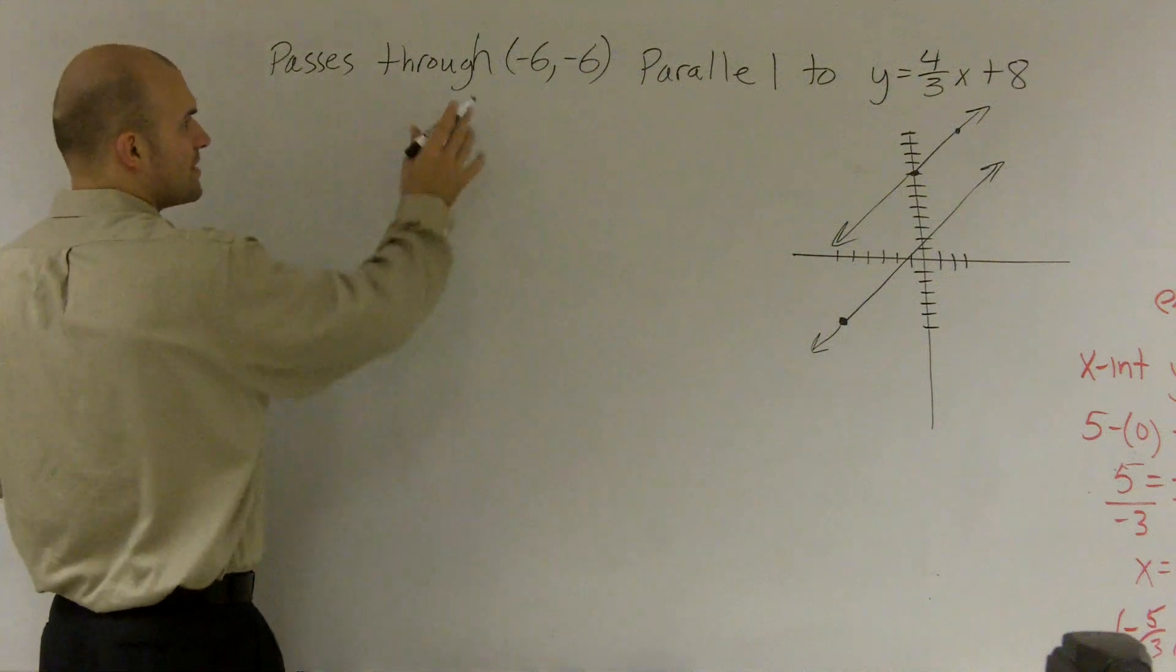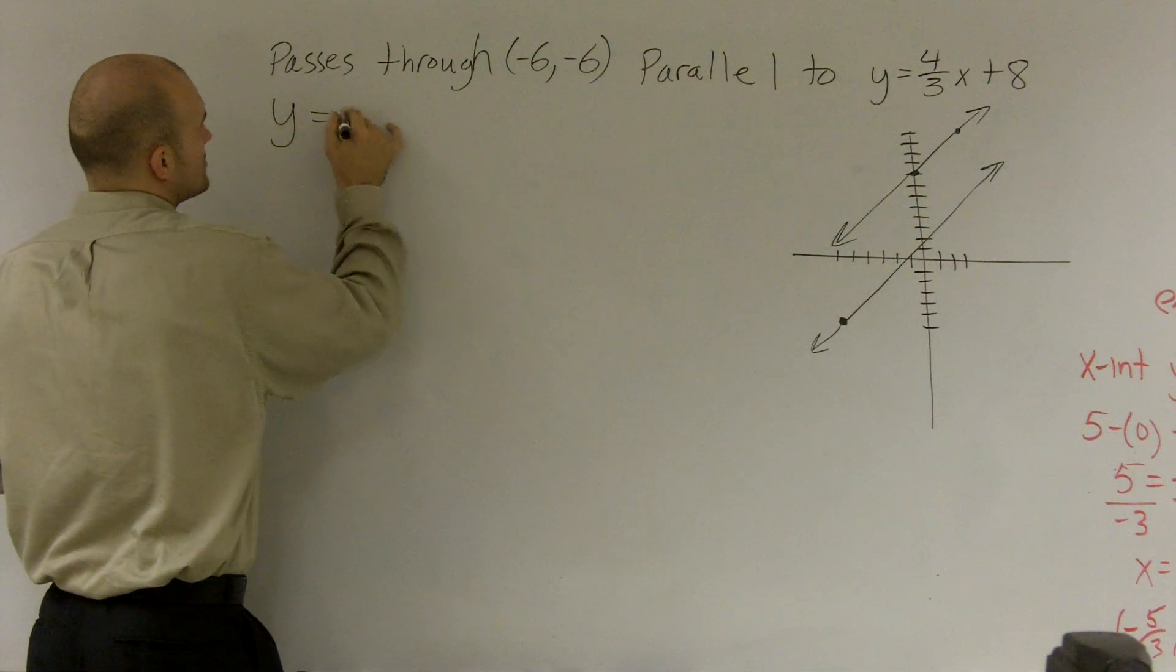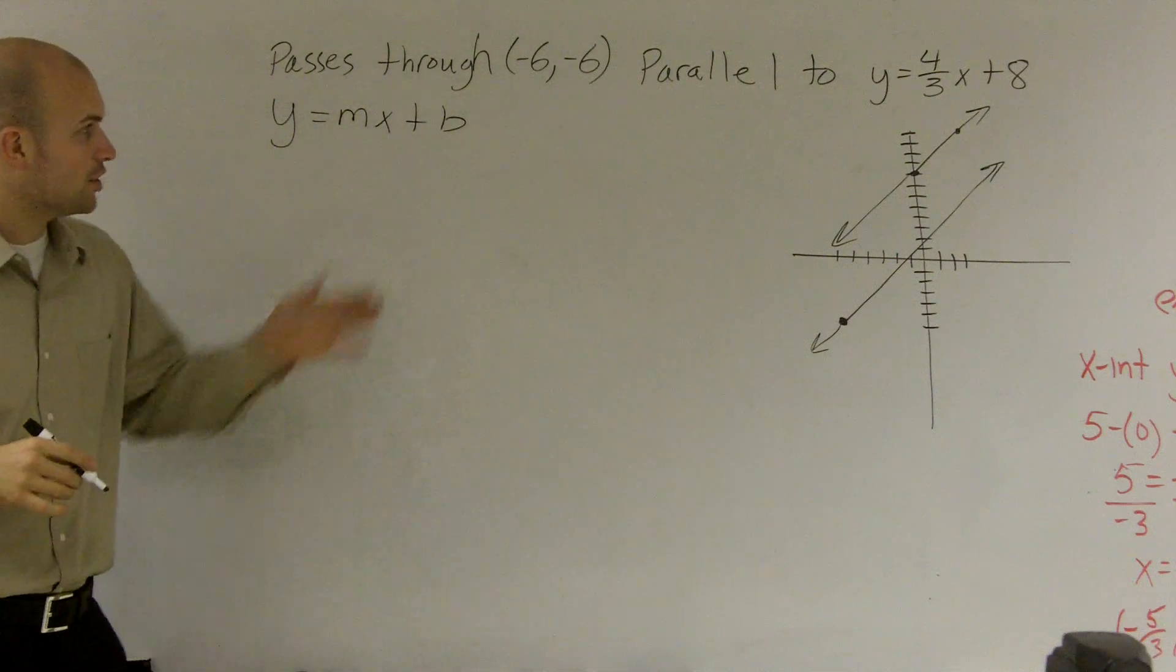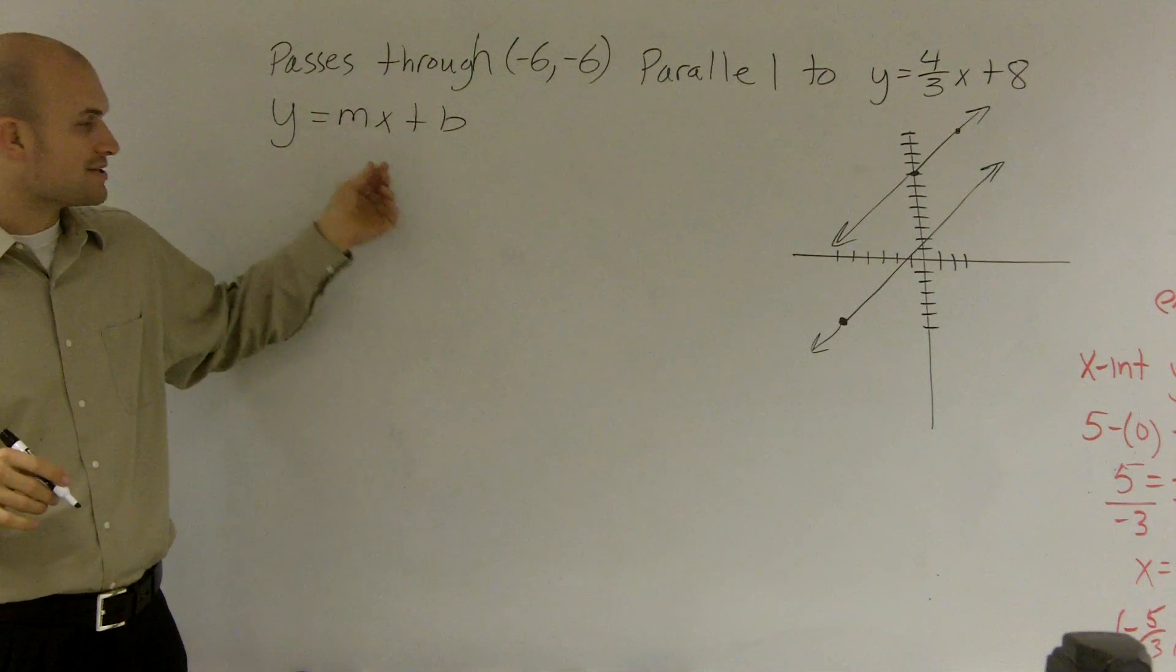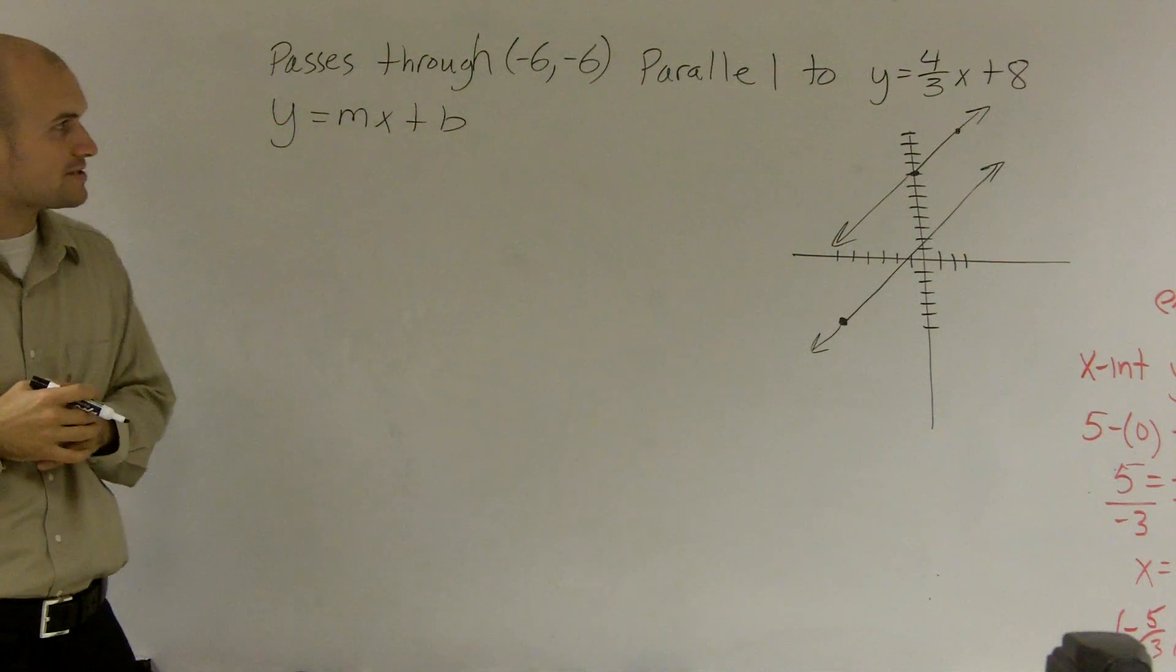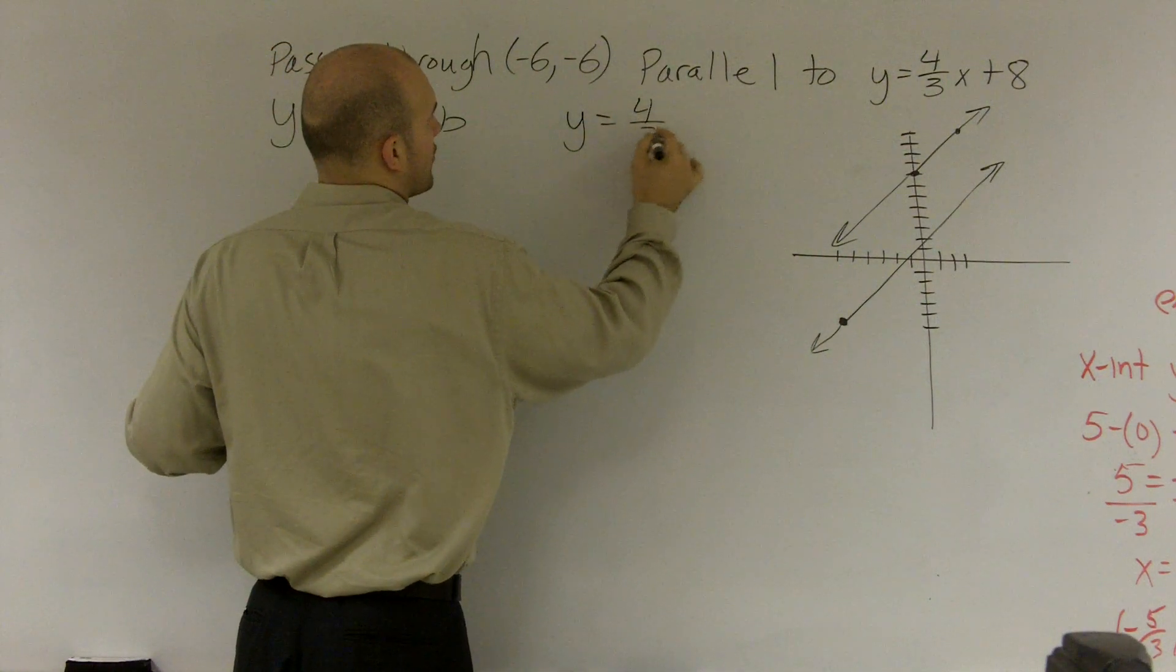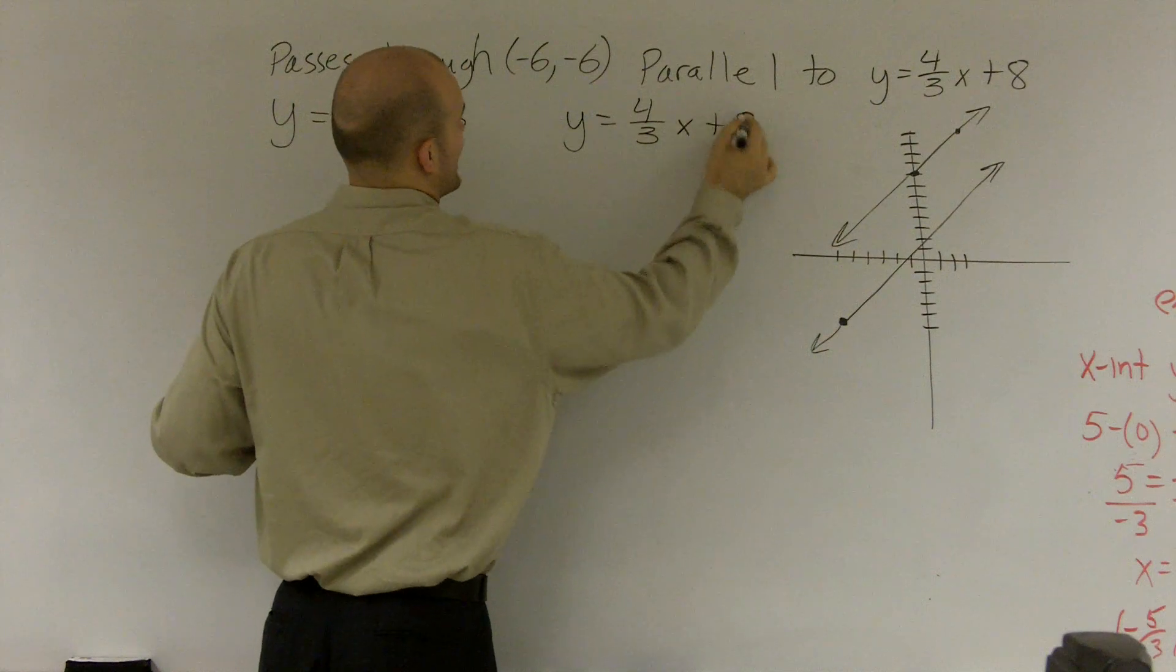So let's write what our equation is going to look like. It's going to be y = mx + b, where m represents our slope and b represents our y-intercept. So we have one equation where y = 4/3x + 8.